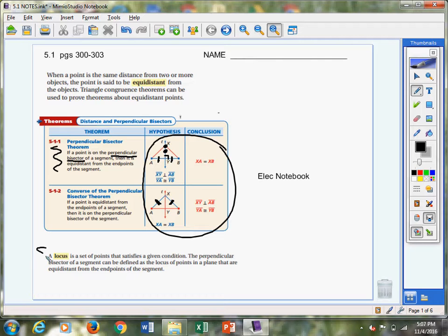Now down here, they're giving you another term, a locus, not the bug, that would be a T on the end of that. A locus is a set of points that satisfies a given condition. The perpendicular bisector of a segment can be defined as the locus, a set of points in a plane that are equidistant from the endpoints of the segment. So think locus is a set. Locus is a set of points. Okay, that's all that is. All right, let's flip the page.